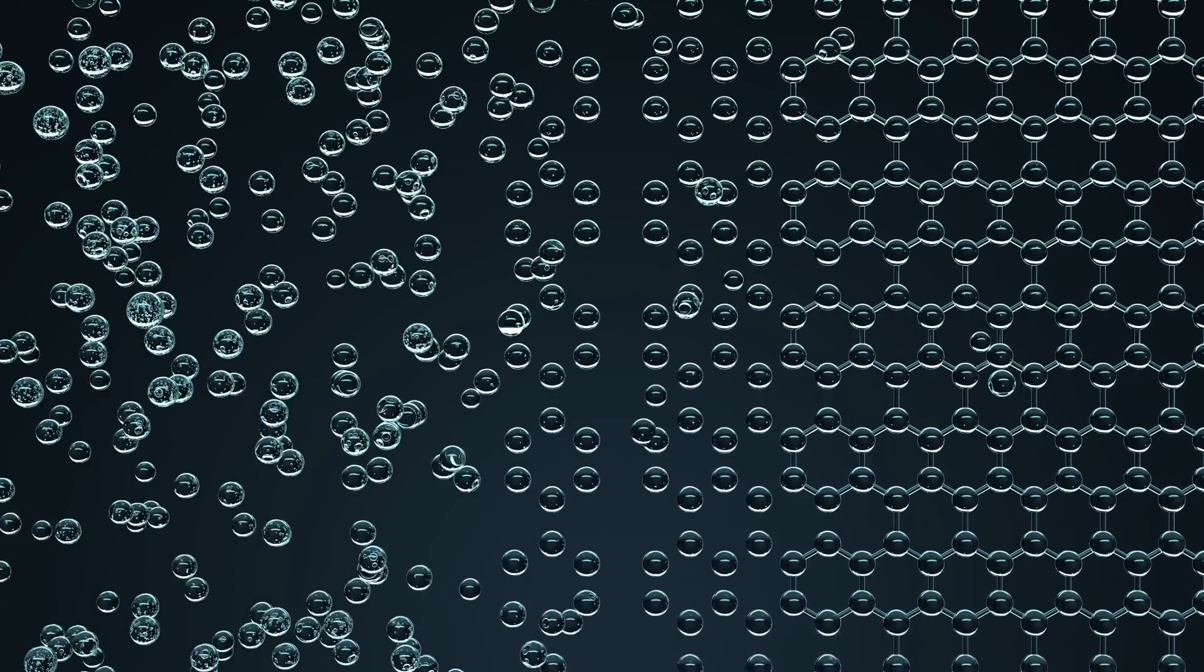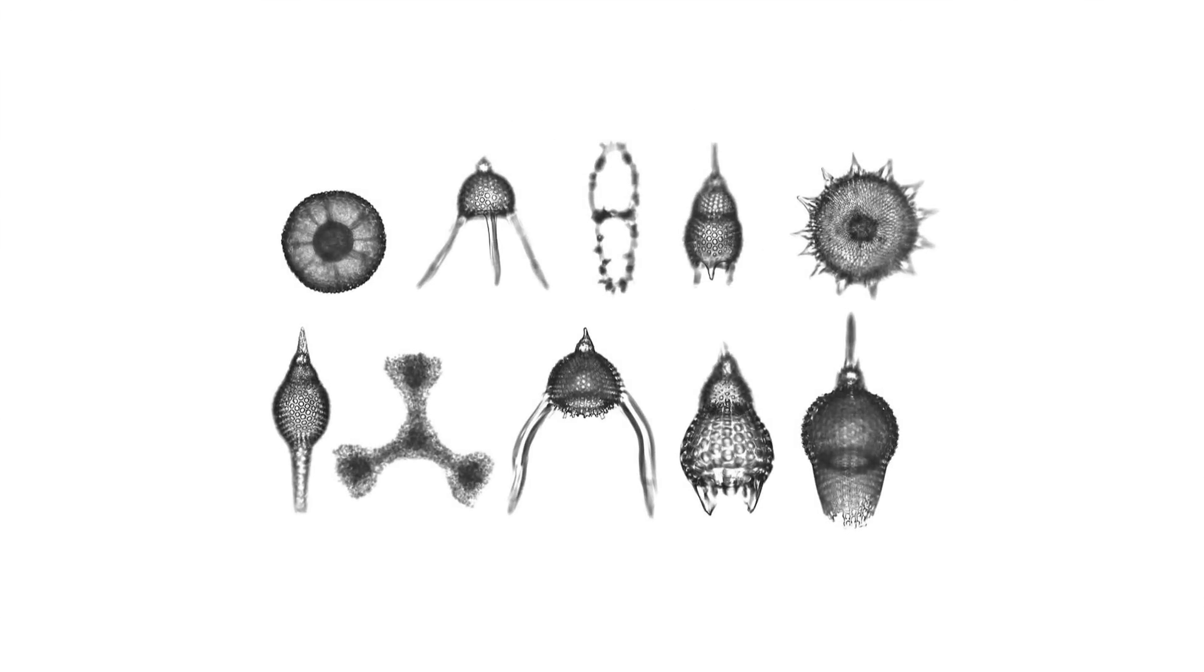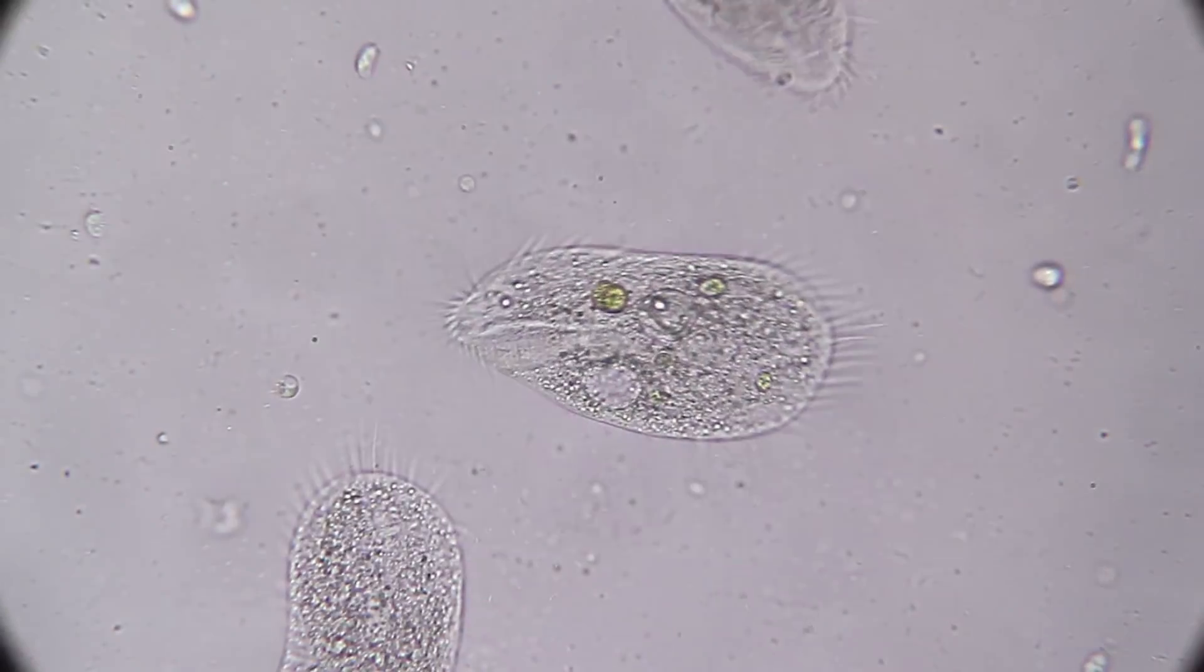These invisible forces not only shape complex multicellular organisms like you and me, they also shape unicellular organisms like radiolarians. These single-celled organisms all share identical DNA, but are observed to form in different, complex shapes.